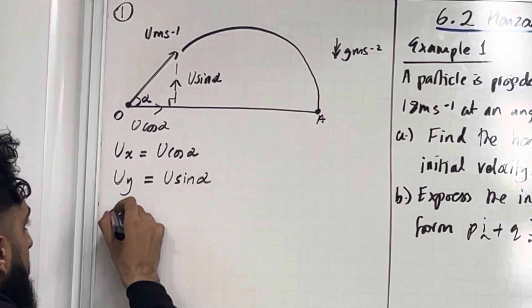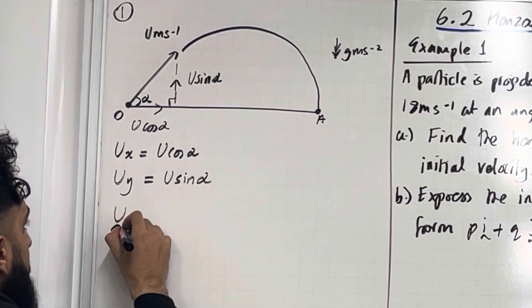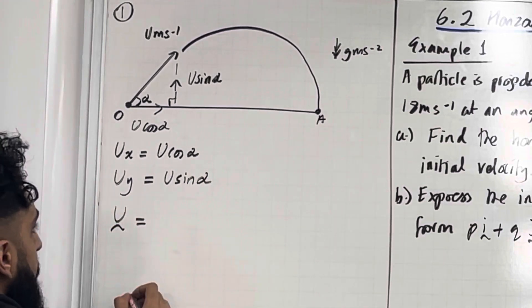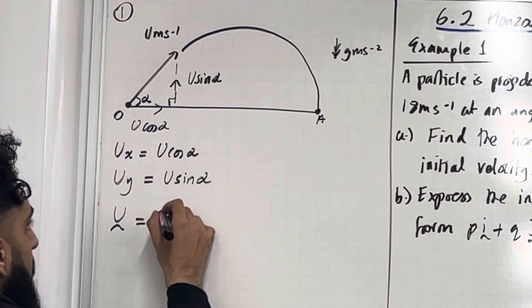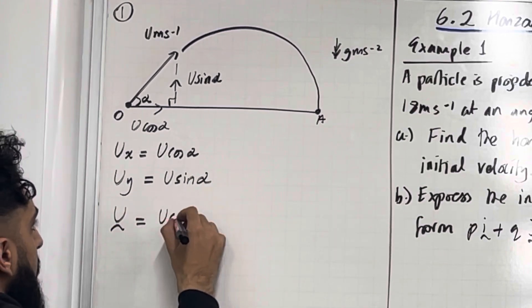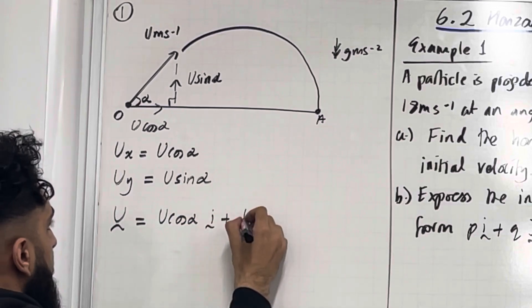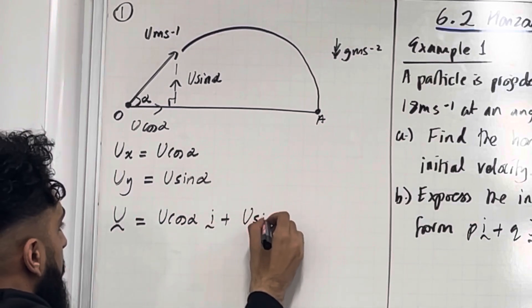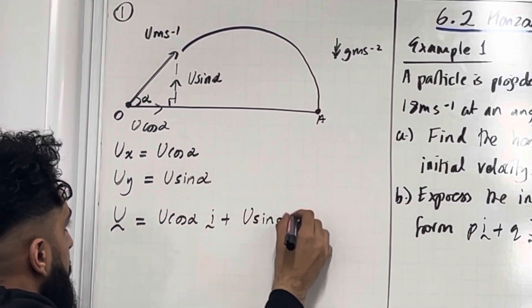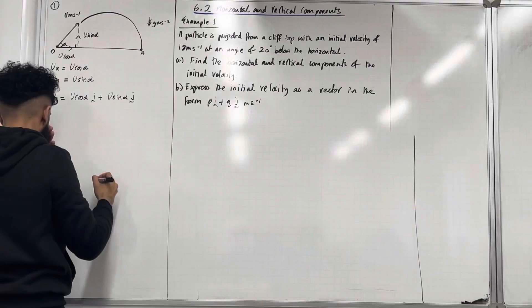We can form a vector for the initial velocity. This will be u cos alpha i plus u sin alpha j.